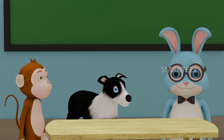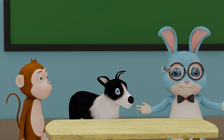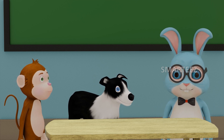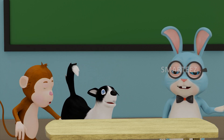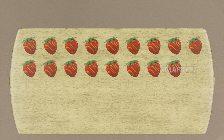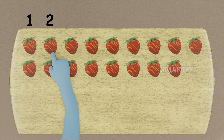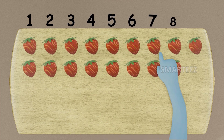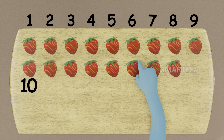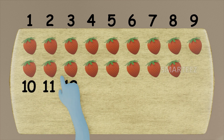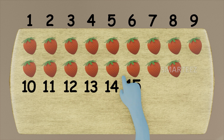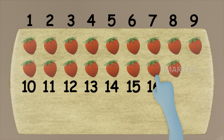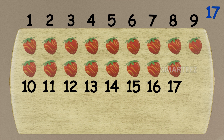Let's do one last one. This time I'm going to split my favorite yummy fruit, strawberry, between Byra and Rangu. Let's see how many strawberries we have here on the table. That's one, two, three, four, five, six, seven, eight, nine, ten, eleven, twelve, thirteen, fourteen, fifteen, and sixteen. We have a total of seventeen strawberries.